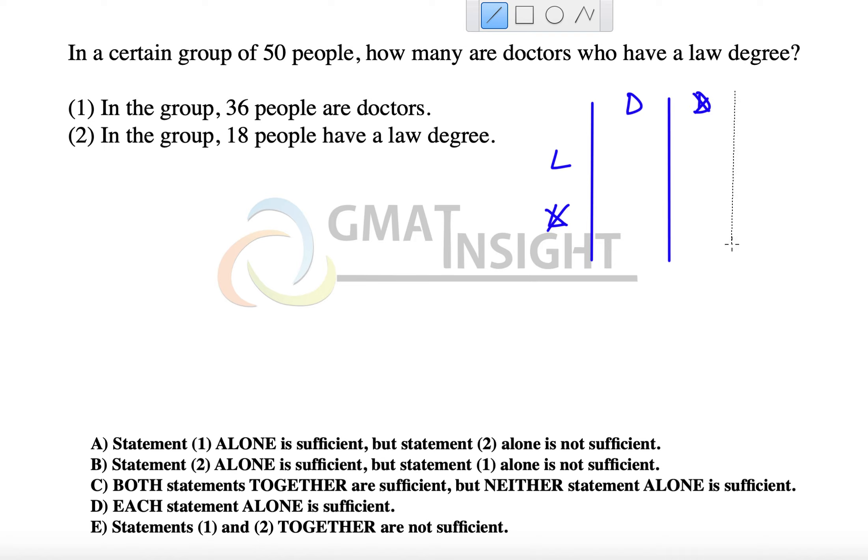In which we draw the double matrix if it's a question of two sets. That's one thing I've done on a precautionary basis. The group is of 50 people, so 50 comes to the right bottom corner which is the total number of people.